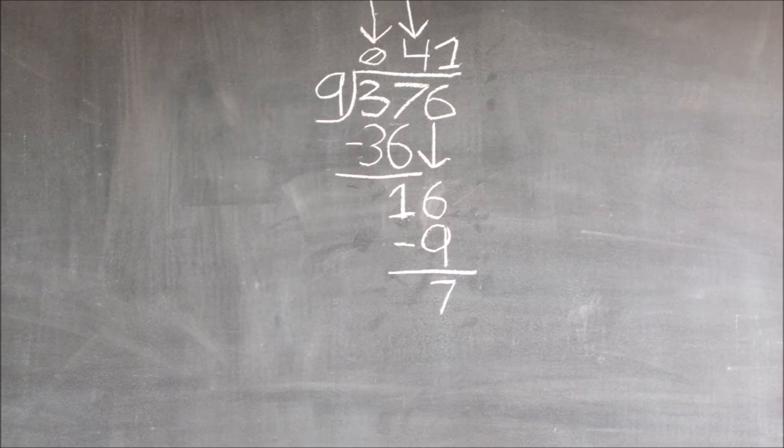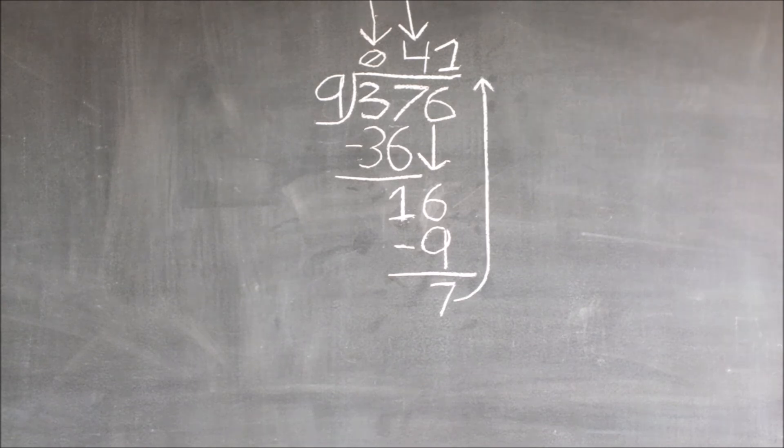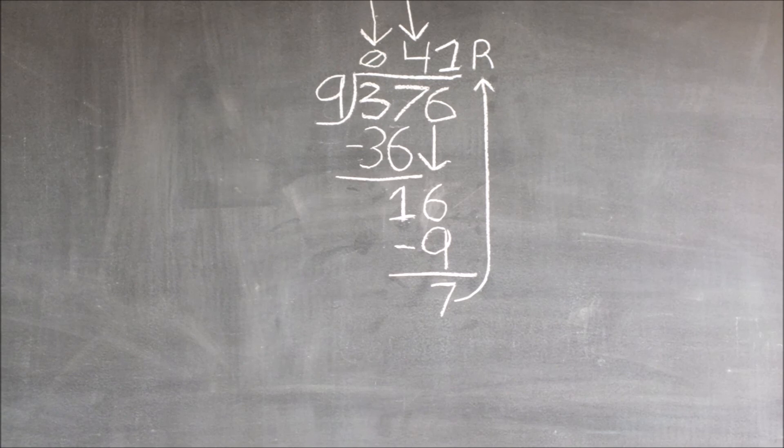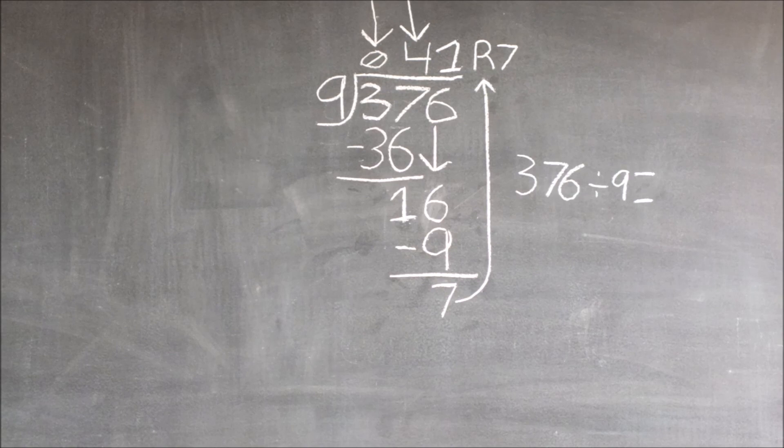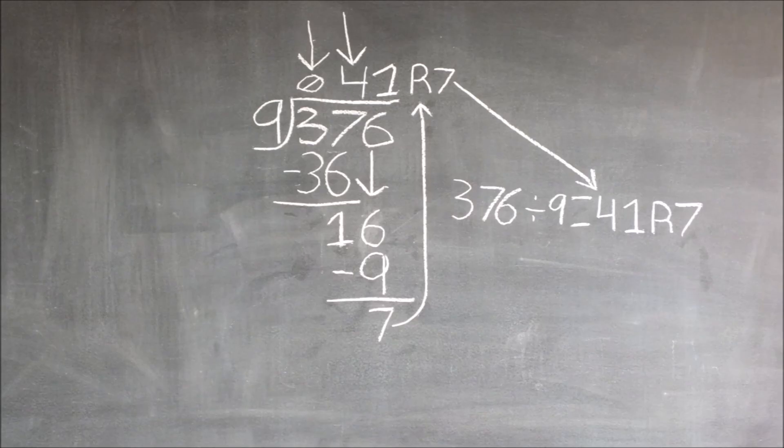Now we bring the leftover seven up. Now we write the R, and beside that we write the seven. We can say 376 divided by nine is equal to 41 with a remainder of seven.